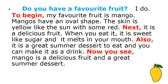Here it reads: Do you have a favorite fruit? I do. To begin, my favorite fruit is mango. Mangoes have an oval shape. The skin is yellow like the sun with some red. Next, it is a delicious fruit. When you eat it, it is sweet like sugar and it melts in your mouth. Also, it is a great summer dessert to eat and you can make it as a drink. Now, you see, mango is a delicious fruit and a great summer dessert.